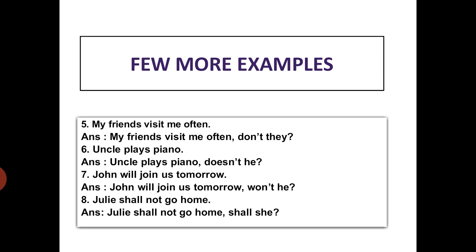'John will join us tomorrow.' Here the associative verb is 'will.' To make it negative, we need to write 'won't,' and for John, the pronoun will be 'he.' Question tag: 'won't he?' Next: 'Julie shall not go home.' This is a negative sentence, so the question tag must be positive: 'shall she?'